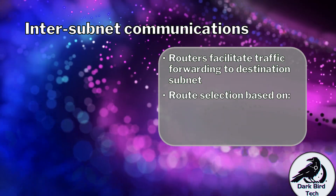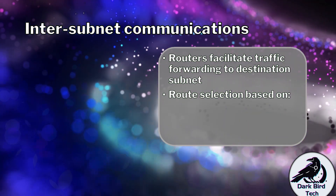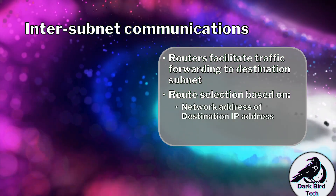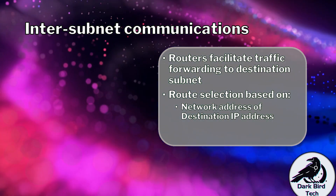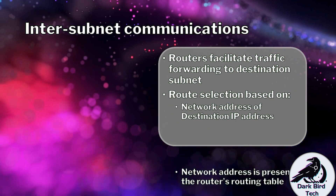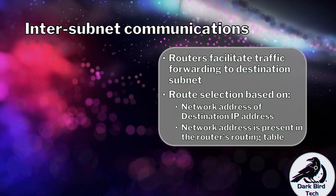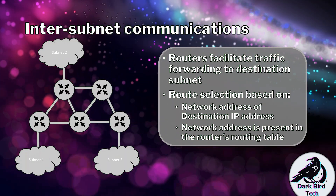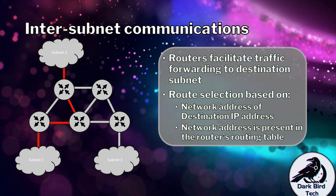A router will make a selection based on two key things. First, that it knows the network address found in the destination IP address field of a packet. And second, that the network address is also present in the router's routing table. Once it has those two things, routers can make a selection and decide how to forward traffic.